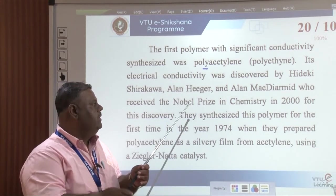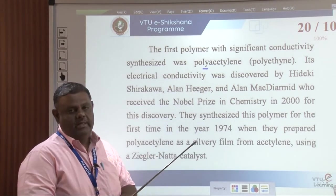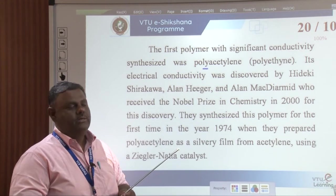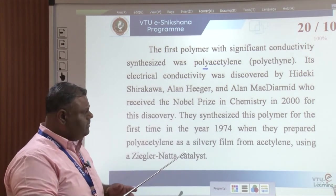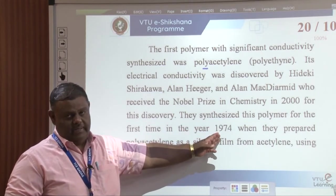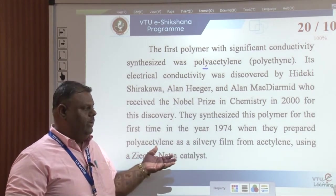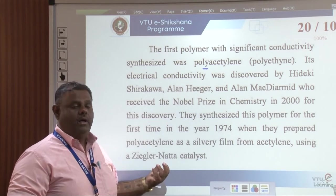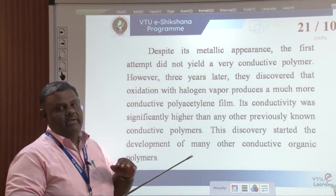They synthesized polyacetylene in 1974 using monomer acetylene and the Ziegler-Natta catalyst. Initially, the polymer had very poor conductivity. Despite significant effort to improve conductivity, they struggled until after three years, when polyacetylene was oxidized with halogen vapor.